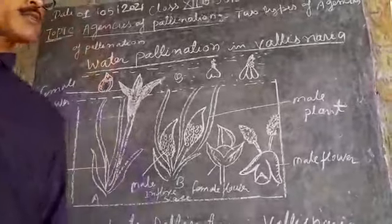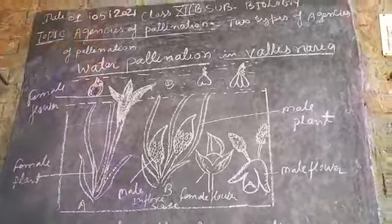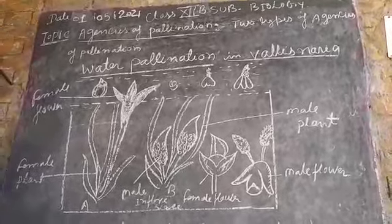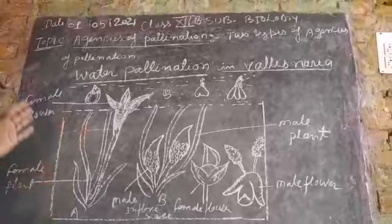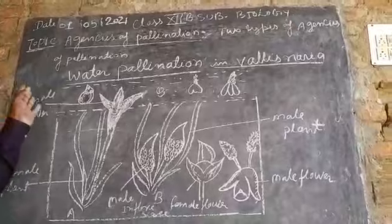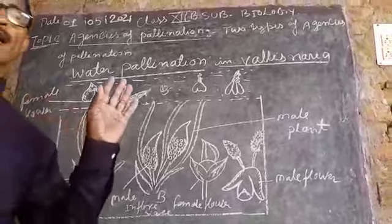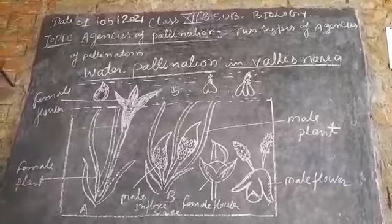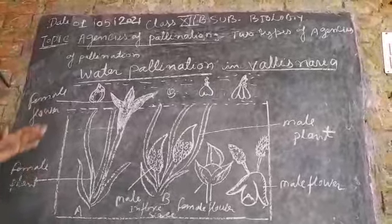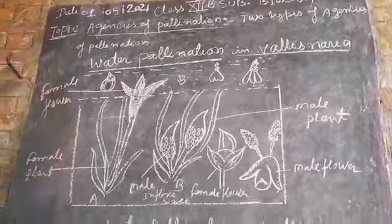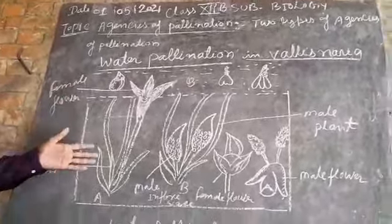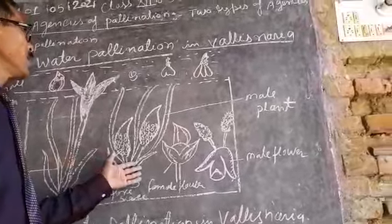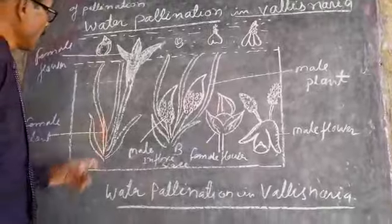Attention please. Class 12th bio group, agencies of pollination. The first agency is the abiotic agency, in which different pollination types are discussed, and the second is water pollination. The most familiar and common example in water pollination involves a submerged plant. Here is the female flower — this is what the female flower looks like in this type of plant.